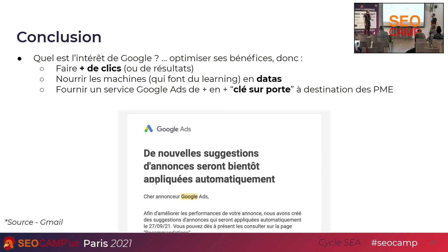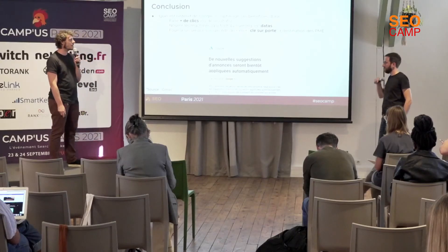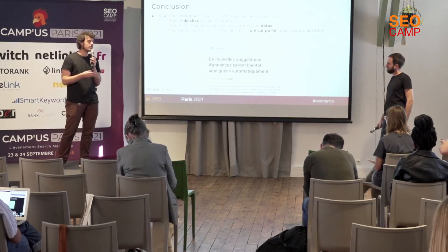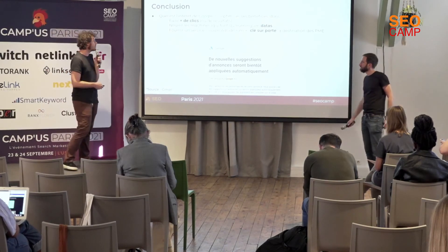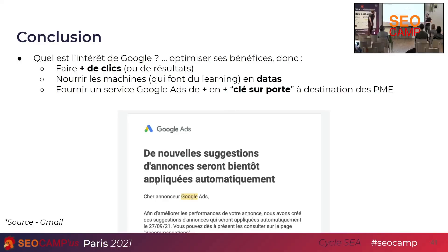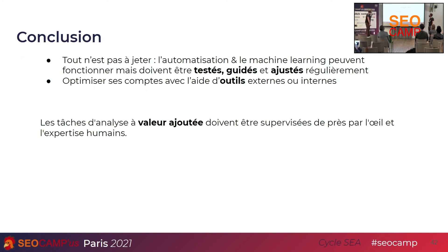C'est vraiment la stratégie, et on n'est pas toujours les préférés de Google, nous en agence, parce qu'on se place entre le client et Google lui-même. On essaie quelque part de tirer la couverture vers le client alors que Google la tire plutôt vers lui. Soyez vraiment vigilants aux automatisations et aux choses qui se mettent toutes seules sur votre compte. Toute la question de l'automatisation : tout n'est pas à jeter — il y a des exemples où on voit que ça fonctionne. Le machine learning, l'automatisation fonctionne, mais il faut toujours tester, guider, ajuster.